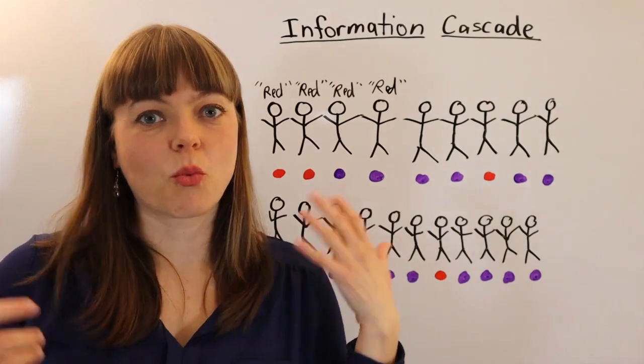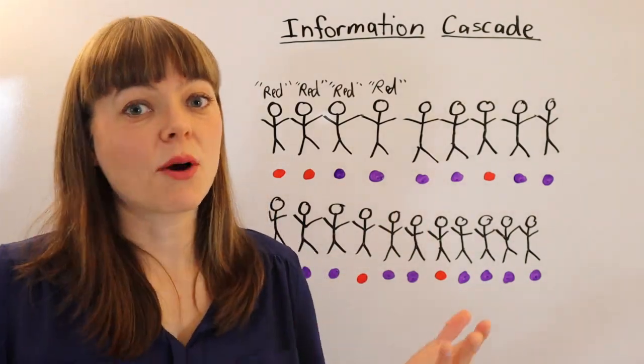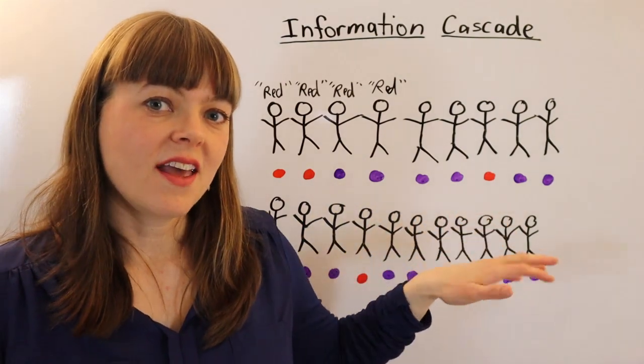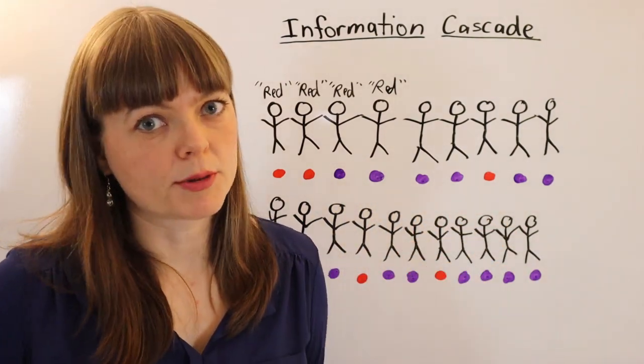So I hope this is giving you a sense for what is an information cascade? How does it work? Why is this a rational phenomenon, and yet a phenomenon that leads to all kinds of problems?